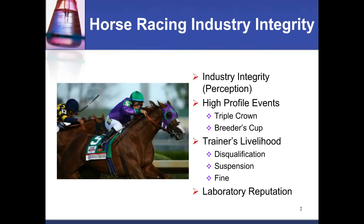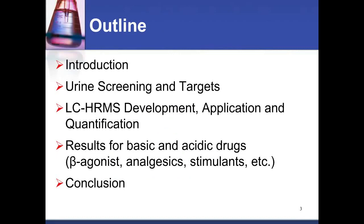Before getting into the equipment details, I'd like to share some information about racing industry integrity and why drug testing is so important. A lot of that centers around high-profile events like the Kentucky Derby and Breeders' Cup events, which accumulate purse money of over $25 million. With any positive findings we report, the trainer's livelihood is at risk — disqualification of the horse, suspension, and fines are potential consequences. So we want to be very careful in all our analytical approaches, and laboratory reputation is paramount to the University of California.